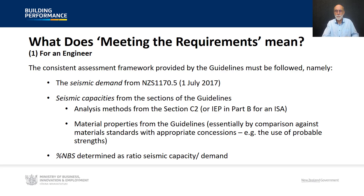From that, the %NBS rating is determined as essentially a capacity-upon-demand ratio. It is worth noting that there are certain forms of construction for which there is no explicit guidance in the guidelines — one example being partially reinforced concrete masonry. But by working through the framework provided in the guidelines, the seismic rating can always be determined.